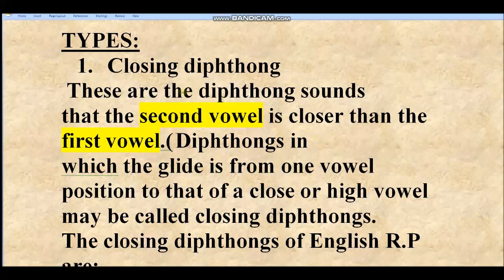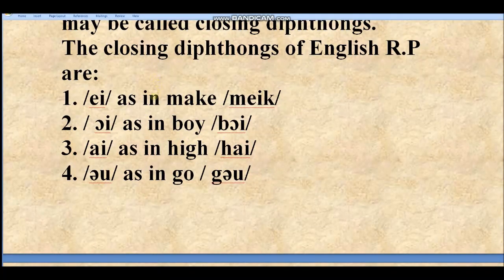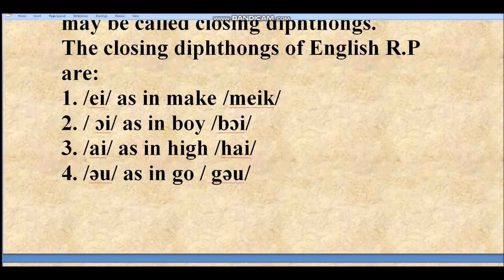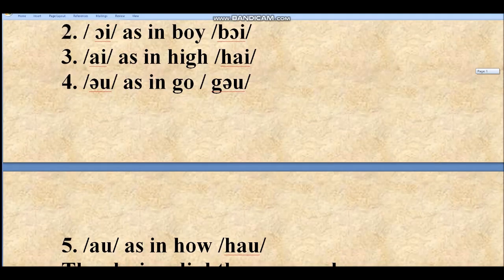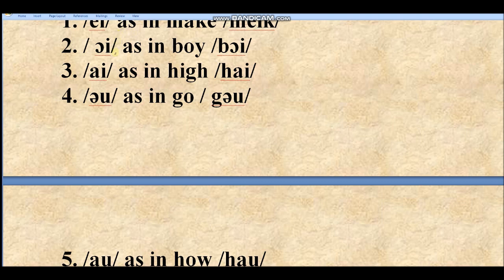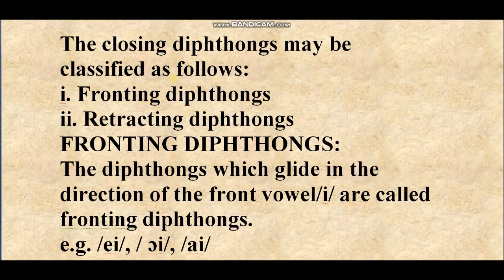So in closing diphthongs, the second vowel is closer than the first vowel. Let's see what the closing diphthongs of English RP — Received Pronunciation — are. They are: /eɪ/ as in 'make', /ɔɪ/ as in 'boy', /aɪ/ as in 'high', /əʊ/ as in 'go', and /aʊ/ as in 'how'. So there are five closing diphthongs.